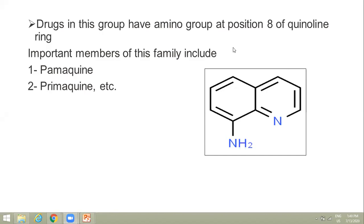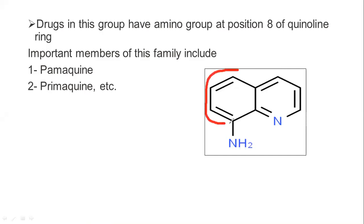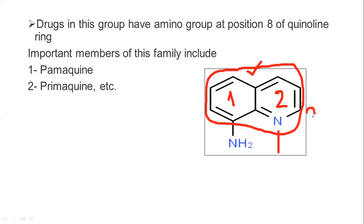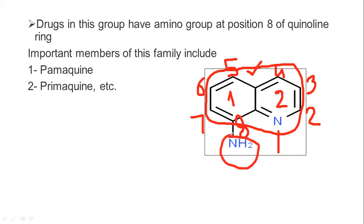This is the whole quinoline ring structure. When you attempt it in a paper, you have to state that this is the quinoline ring — ring 1 is the benzene ring, ring 2 is the pyridine ring. Then label the positions: 1 through 8. At position 8, we have the amino group. This is 8-aminoquinoline.